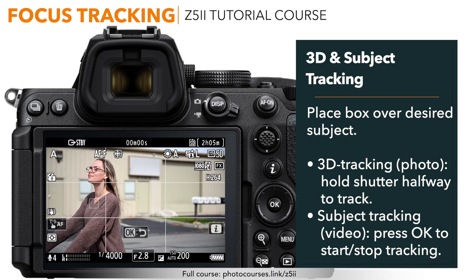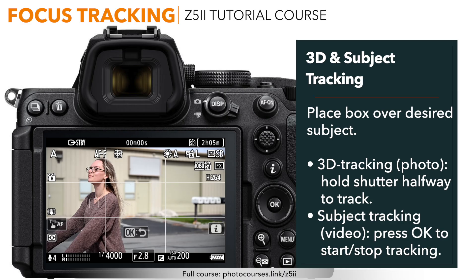The camera might struggle tracking otherwise. With all of these options — the different focus modes, AF area modes, tracking types — what's the best to use? I like to narrow it down to a few options. If you're constantly photographing different types of subjects in different situations, you might want to go to the auto area AF mode with auto subject tracking. That's going to give you a lot of flexibility for whatever might come your way. You can try setting the autofocus mode to AF-A so that the camera can switch between AFC and AFS.